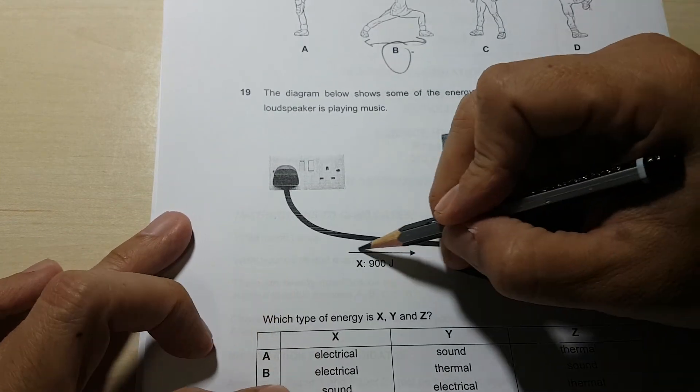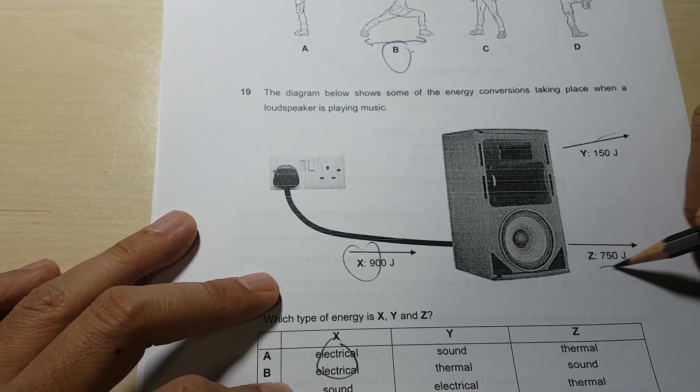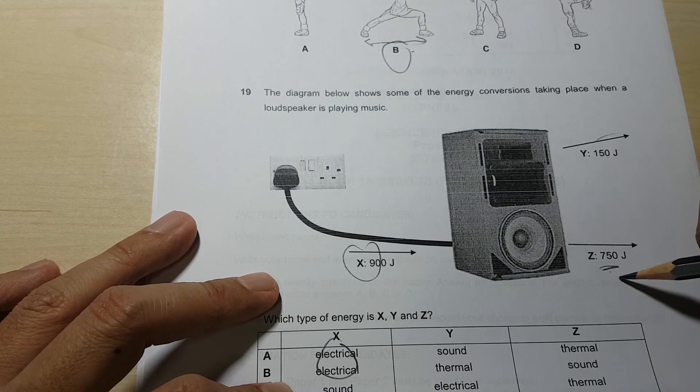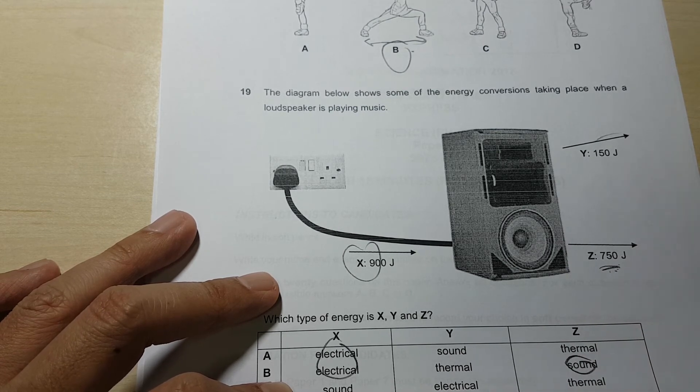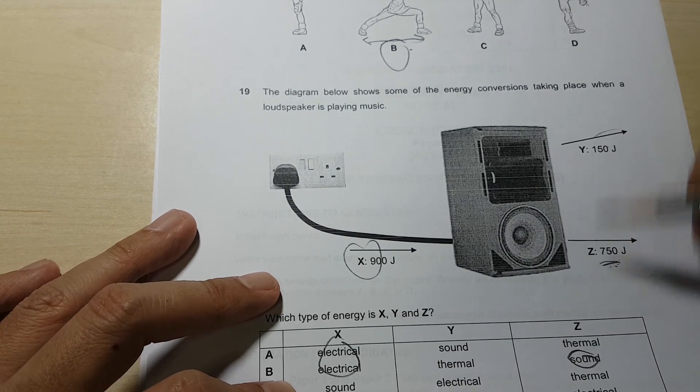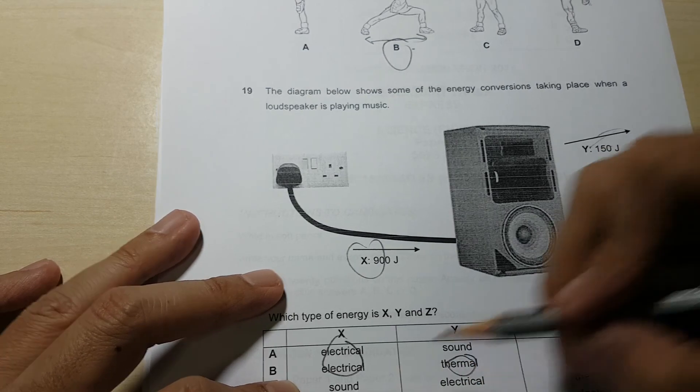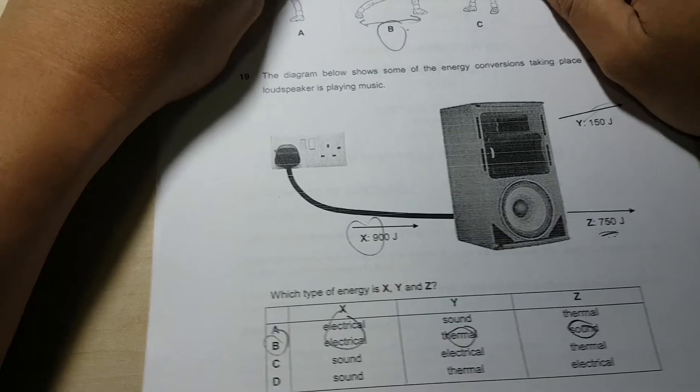Question 19. This one must be electrical energy. Y and Z - Z has more. This is a speaker. So this Z must be sound. Cannot be keep giving off heat. It gives off more heat than sound. That means it's a heater. It's more heater than a speaker. So thermal energy Y is just a byproduct of it. So answer B in this case.